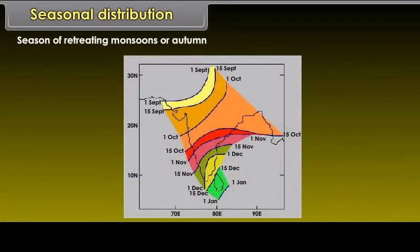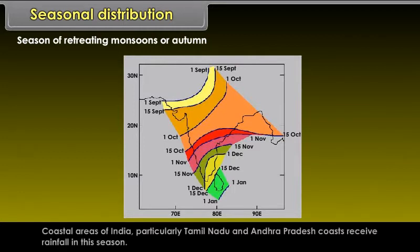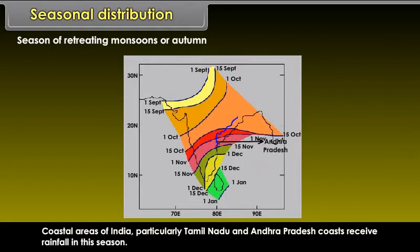During the season of retreating monsoons or autumn, winds move and turn back from the mainland to the Indian Ocean. Coastal areas of India, particularly Tamil Nadu and Andhra Pradesh coasts, receive rainfall in this season.